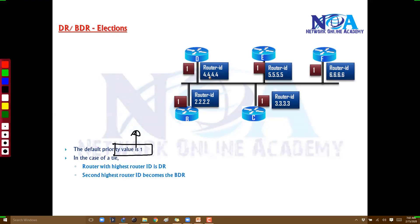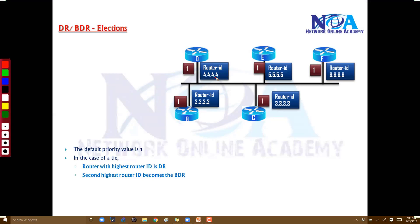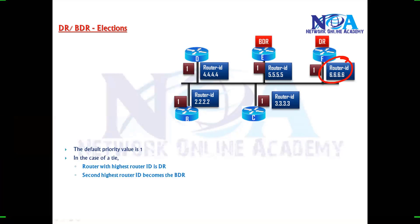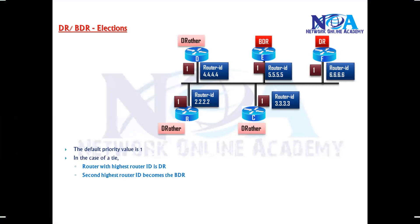The highest router ID is determined numerically: compare the first portion, then second, third, and fourth. You cannot have the same router ID on two routers in an OSPF domain. In this example, the router IDs are 4, 5, 6, 2, 3 — the highest is 6, so router F becomes the DR, and the next highest becomes the BDR.